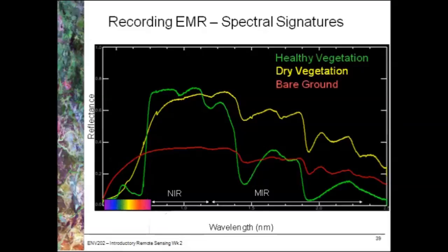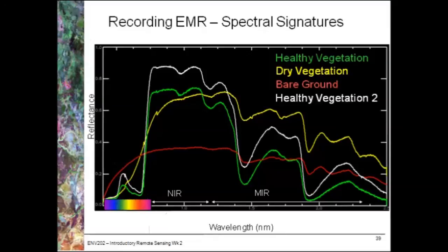If we look at a spectral signature curve of bare ground, we don't have those chlorophyll absorption troughs in the blue and the red, we don't have the high near infrared reflectance that the plant cellular structure and biomass gives us, and we don't have those water absorption troughs either. Just to show some variability, the last curve is another sample of healthy vegetation. You'll see the exact same sorts of features as the first spectra — the green and the white curves are very similar in terms of where the different absorption and reflectance features are occurring.